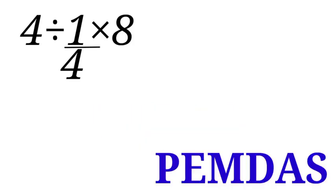Now let us go back to our question. We have 4 divided by 1 over 4 times 8. We are going to move from left to right. Going from left to right we have division first, and we are going to divide 4 divided by 1 over 4.